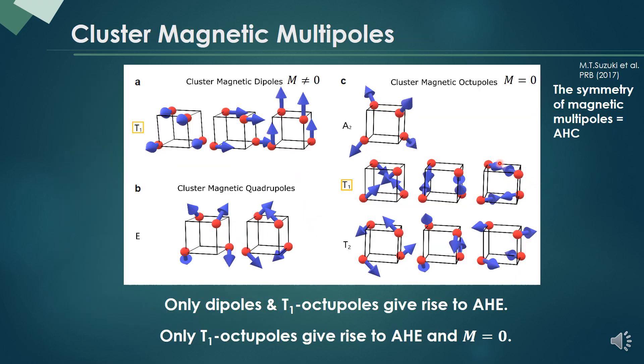Therefore, we adopt the concept of cluster magnetic multipoles, which is a classification of every possible magnetic structures in the system by group theory.